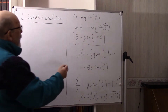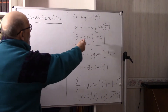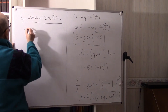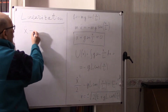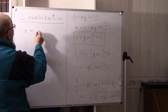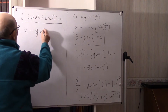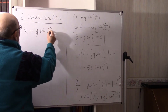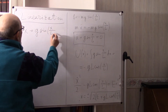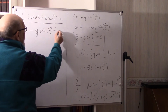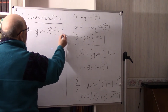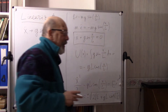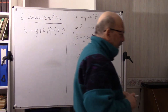Consider the equation: X double-dot plus G sine(X/L) equals 0. As we see, this equation is highly complicated to solve exactly.